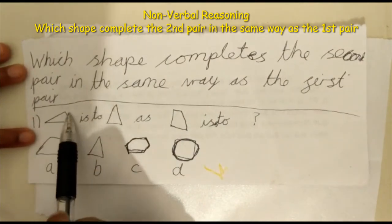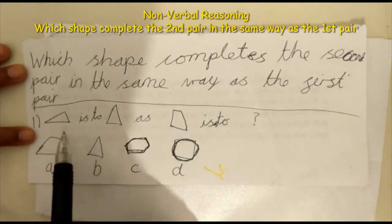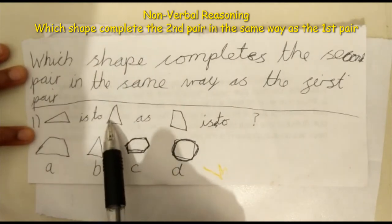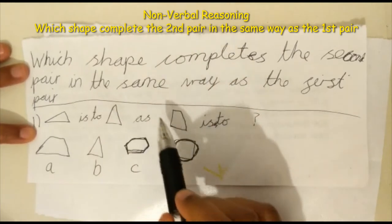So we have here a three-sided shape which is a triangle, the same as another three-sided shape which is also a triangle.